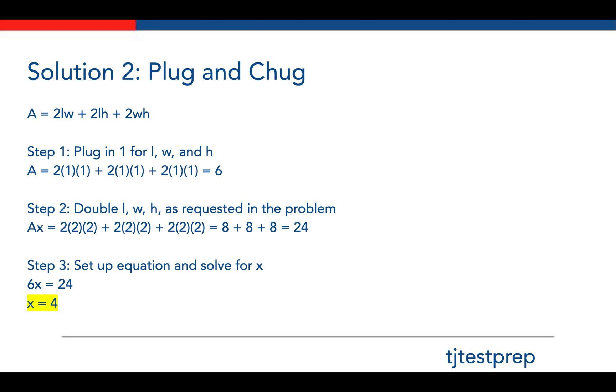Finally, you do the same thing as last time. You would take the modified A over A equals the modified surface area over the surface area. Here, you would do AX over A, which is just X equals 24 over 6, which is 4. You would get the correct answer, which is X equals 4.